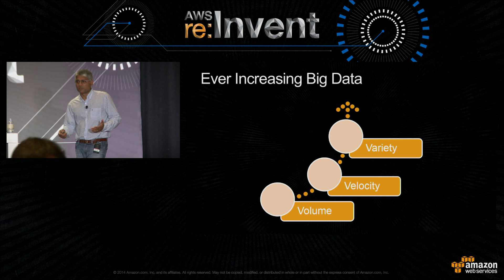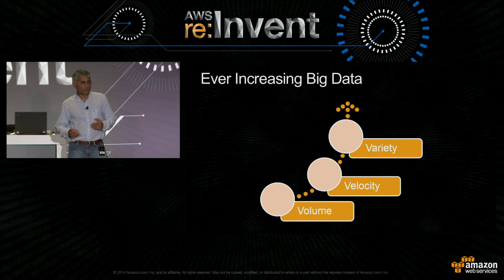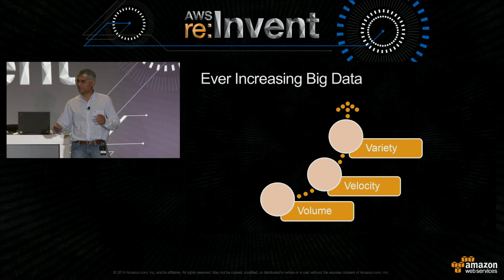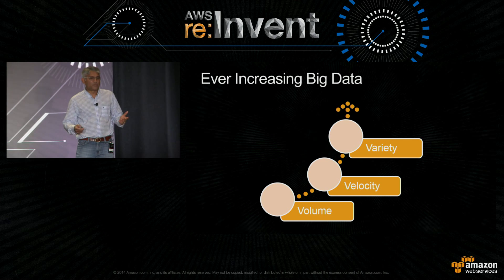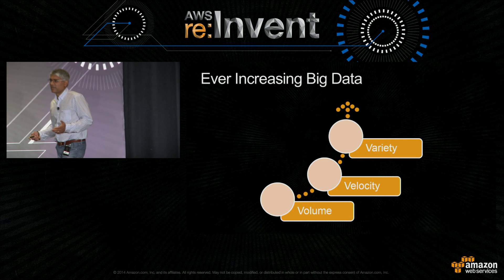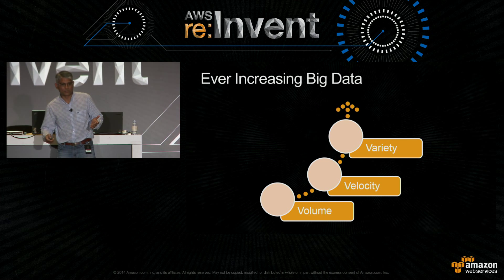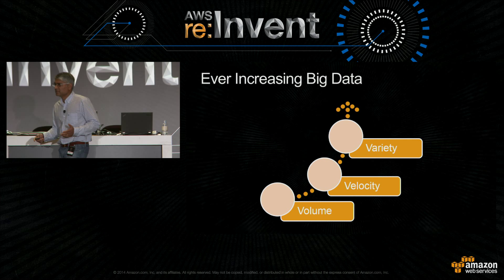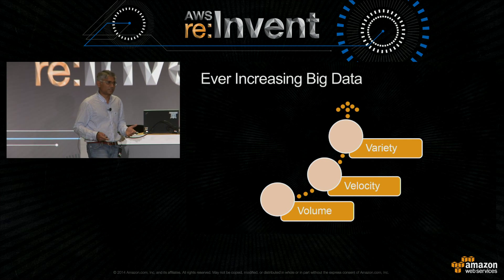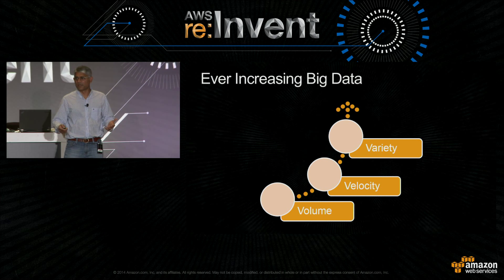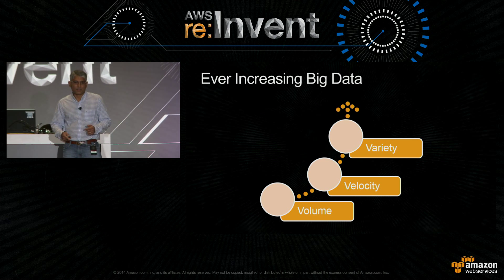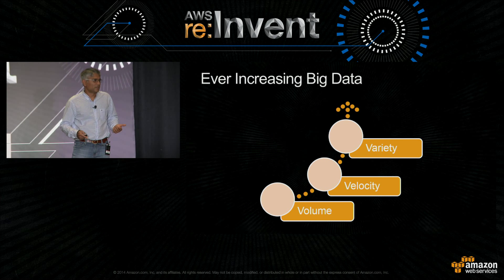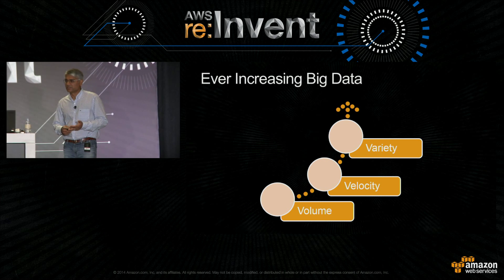Practically, what does it mean in terms of customers using AWS? For example, I work with AdRoll — they're an ad retargeting company. Those are the ads that follow you everywhere on the internet after you visit a retailer site. They're surfacing those ads, serving bids and winning bids. Customers like that handle about 150 terabytes of data flowing in every single day. Their request rates are about 60 billion requests per day — fluctuating between 500,000 and 700,000 requests per second. They need to serve this at about three millisecond latencies.